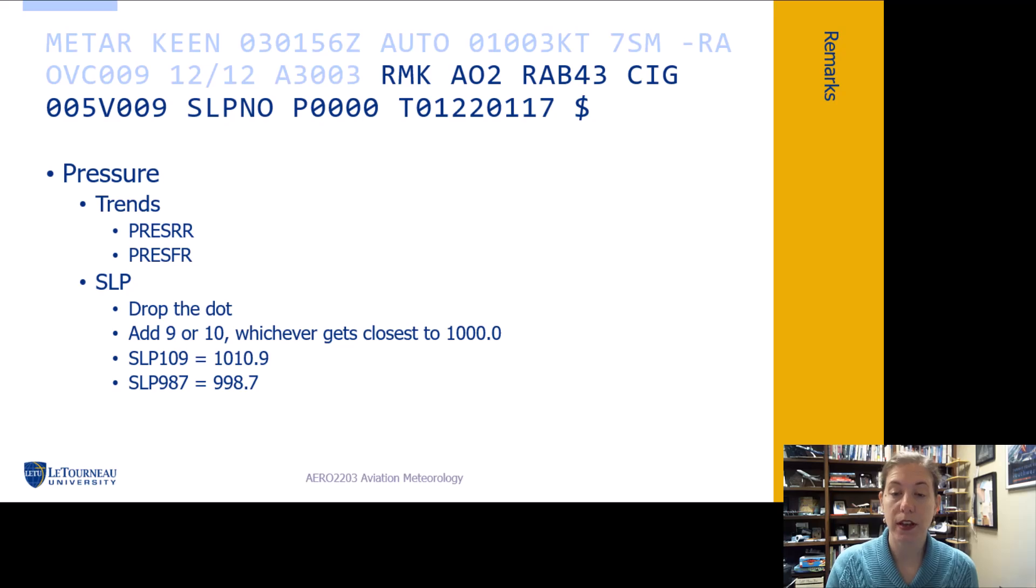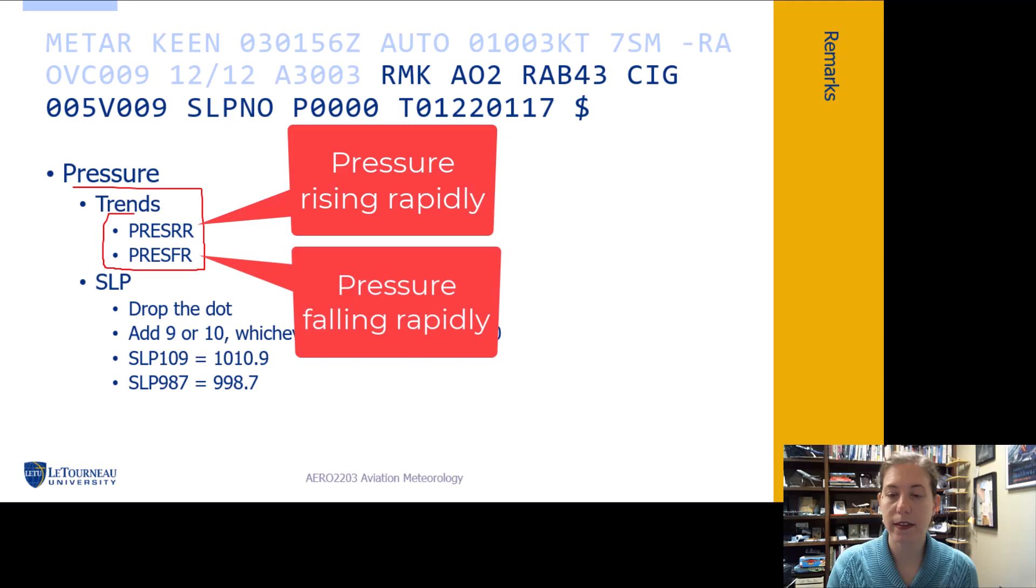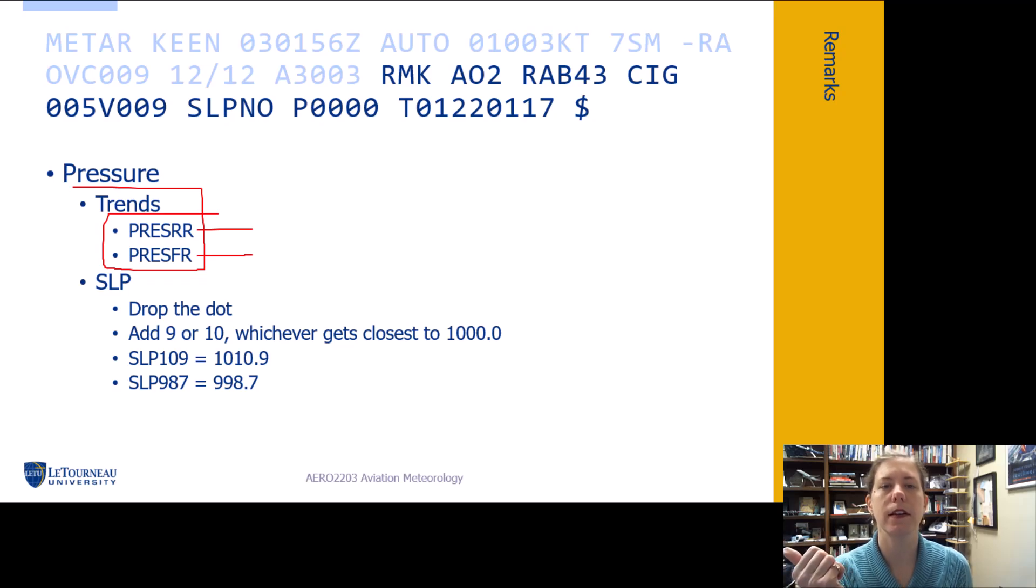Let's talk about the pressure trends. We have a couple going on with pressure rising rapidly and pressure falling rapidly. I've seen this on a METAR when a hurricane was approaching or a thunderstorm or a large frontal system was approaching. You can see the pressure rising rapidly, pressure falling rapidly.